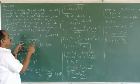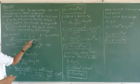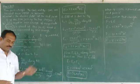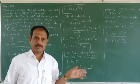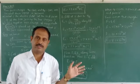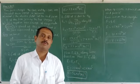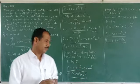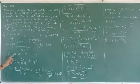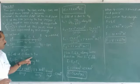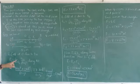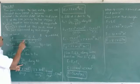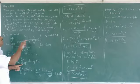Now, what is the net electric field? Because E1 and E2 are along the same direction, when two electric field vectors are along the same direction, the resultant is the sum of the two. Electric field at O due to QA is: E1 = (1/4πε₀) × QA / (AO)², along AO.